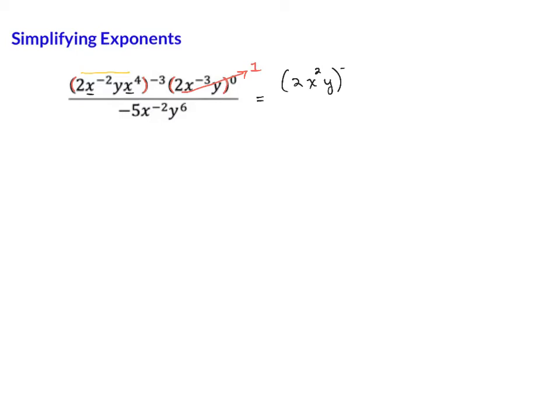And that is all raised to the negative 3. This guy is a 1, so he is gone, and I've got negative 5, x negative 2, y 6.